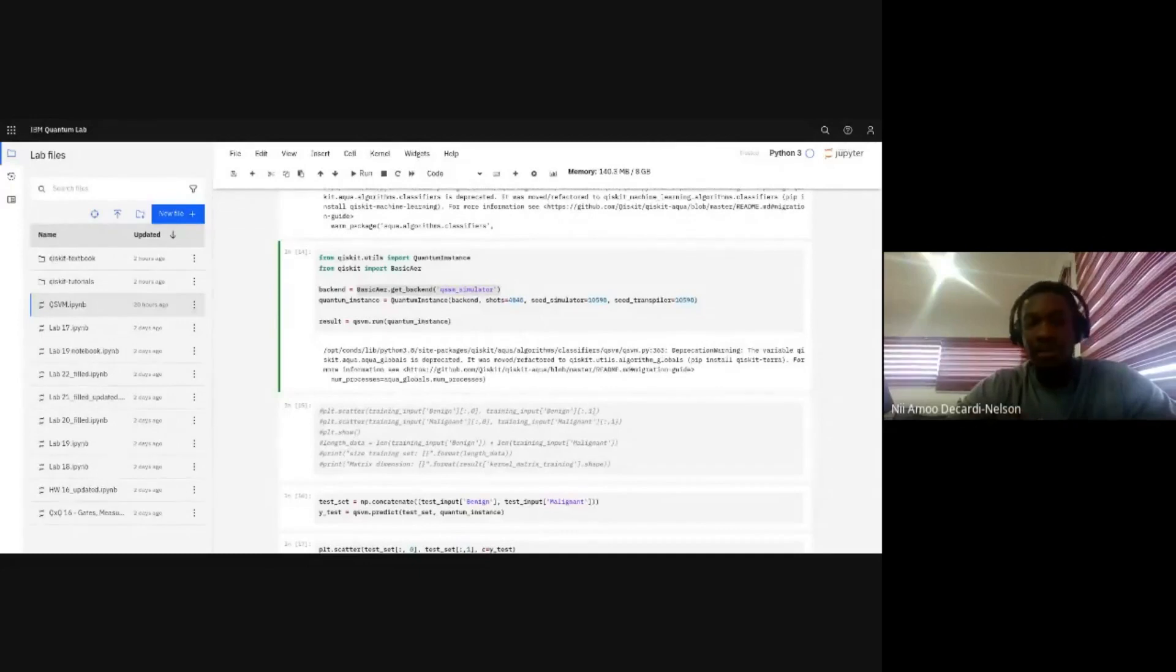So here, we just use this to define the environment for the simulator that we'll be having. The shot here would represent the number of iterations, so the number of times we'll be running our code. Because the outputs of the quantum circuit are probabilities, ideally, we want to take advantage of the law of large numbers. So the more times you repeat the measurement, ideally, the better the accuracy of your measurements. So that's what this is.